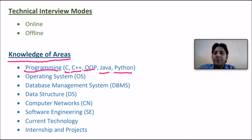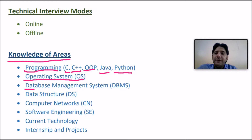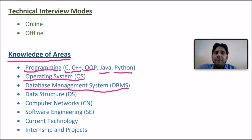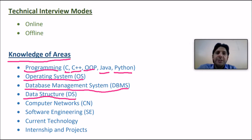You must also know operating systems, including topics like deadlock, memory management, paging, and demand paging. Next, you should have knowledge of database management systems, where normalization and SQL queries are required. Then you must know data structures, including how to find complexity and what the different sorting algorithms are.